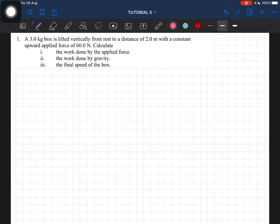Hello everyone, welcome back. Today we will be doing the answer scheme on tutorial chapter 5. The first question: a 3 kilogram box is lifted vertically from rest to a distance of 2 meters with a constant upward applied force of 60 newtons. Calculate the work done by the applied force, gravity, and then the final speed of the box.